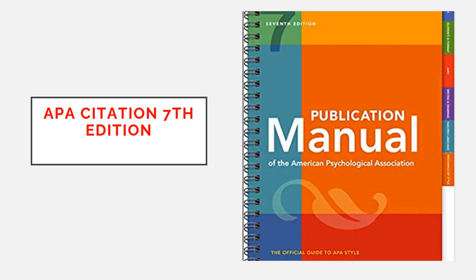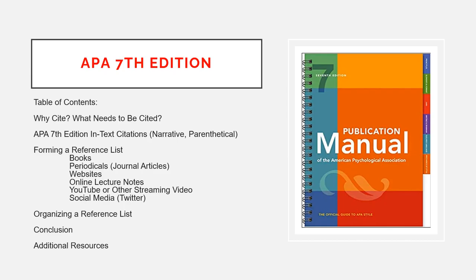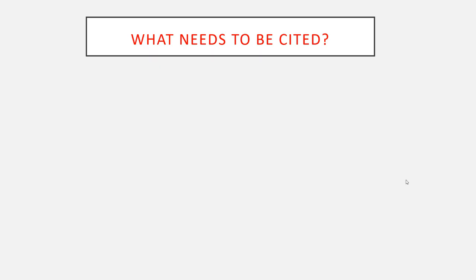Hello and welcome to the APA 7th edition citation video. In this video, we will learn how to create in-text citations and a reference list. If you would like to skip ahead or move backward in the video, use the table of contents located below the video. The main topics covered include an introduction to why we cite, how to write in-text citations, and how to form a reference list for the most common resources such as books, periodicals, and websites.